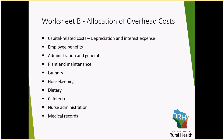This next slide provides an example of the most common overhead departments where costs are allocated. Capital and related costs, including depreciation and interest expense, generally are allocated utilizing square footage. Employee benefits are generally allocated utilizing salaries or gross salaries. Admin and general, which is line 5 on the cost report, is generally allocated utilizing accumulated costs. Plant and maintenance utilizes square footage. Laundry is allocated utilizing patient days or laundry pounds. Housekeeping is allocated on square footage or a time study. Dietary can be allocated on patient days or meals. Cafeteria utilizes salaries or FTEs, nursing administration utilizes nursing salaries or nursing FTEs, and medical records utilizes gross patient service revenue.